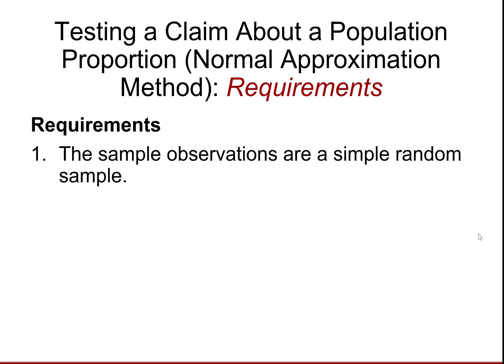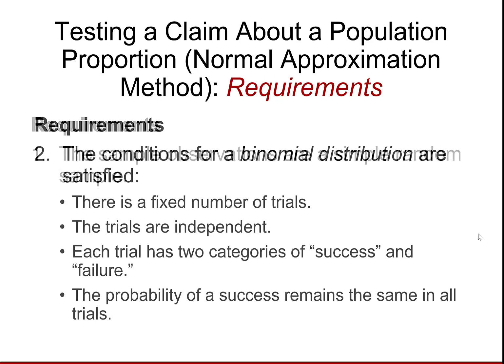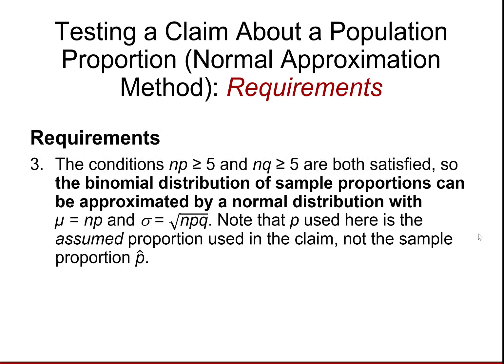Requirements. The sample observations are a simple random sample. The conditions for a binomial distribution are satisfied: there's a fixed number of trials, the trials are independent, each trial has two categories of success and failure, and the probability of success remains the same in all trials. The third requirement is that NP and NQ must be greater than or equal to 5. The binomial distribution of the sample proportions can then be approximated by a normal distribution with mu equal to NP and sigma equal to the square root of NPQ.